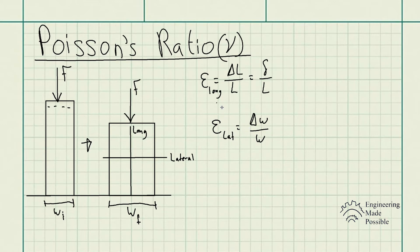So we do have a strain in the longitudinal as well as the lateral axis. So this is what's known as Poisson's ratio, or nu, which essentially is the ratio between them.